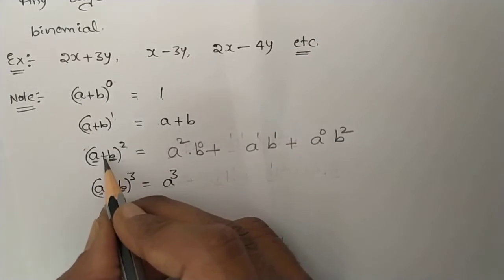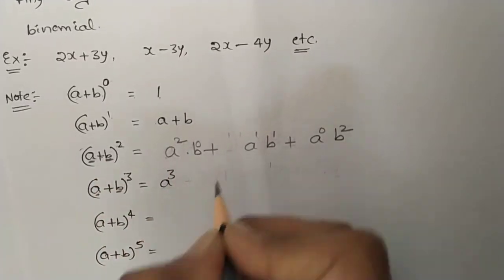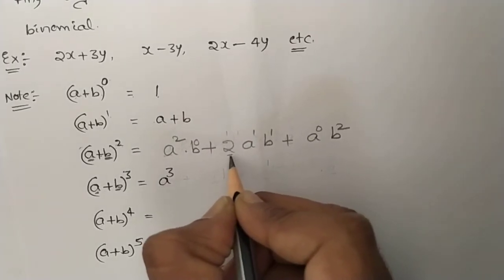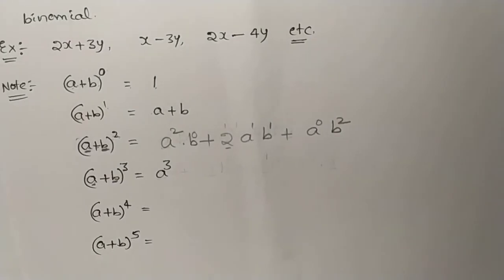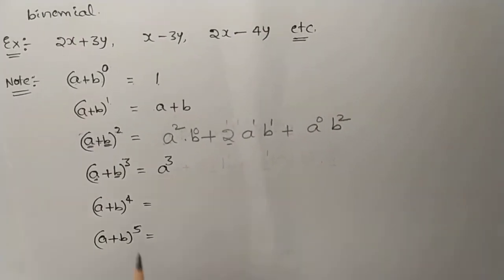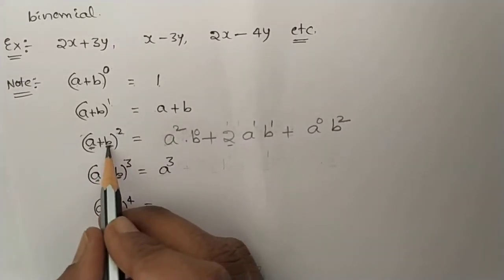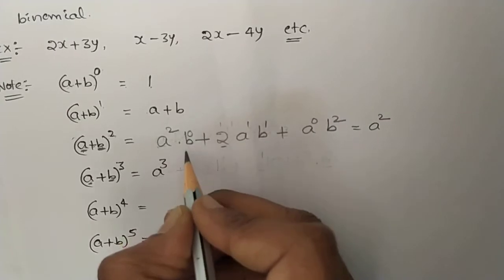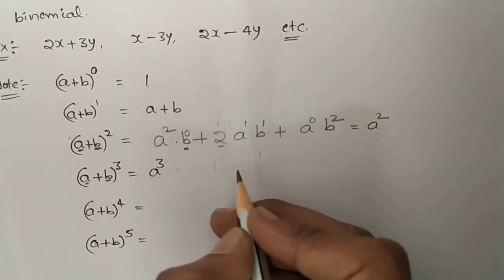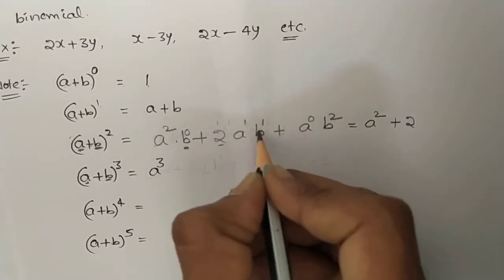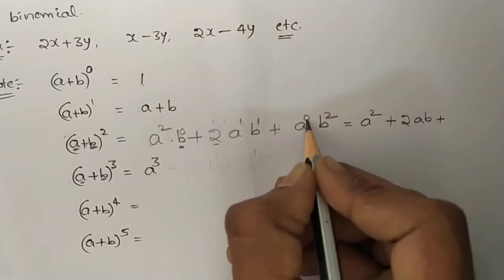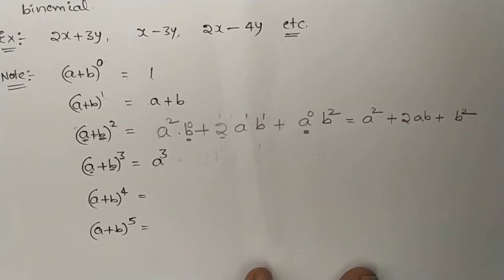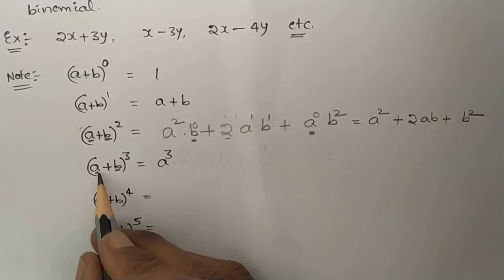So (a + b)² = a² · b⁰ + 2 · a¹ · b¹ + a⁰ · b² = a² + 2ab + b², since b⁰ = 1 and a⁰ = 1. Similarly, for (a + b)³, the first term decreases: a³, a², a¹, a⁰, and the second term increases: b⁰, b¹, b², b³.